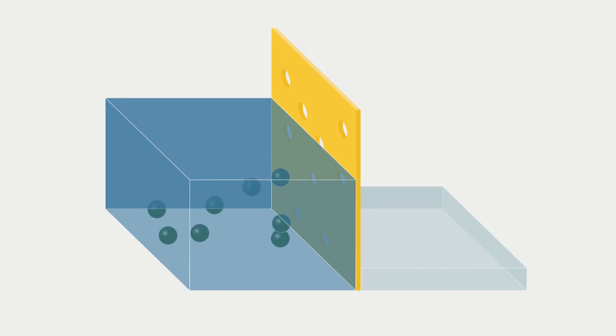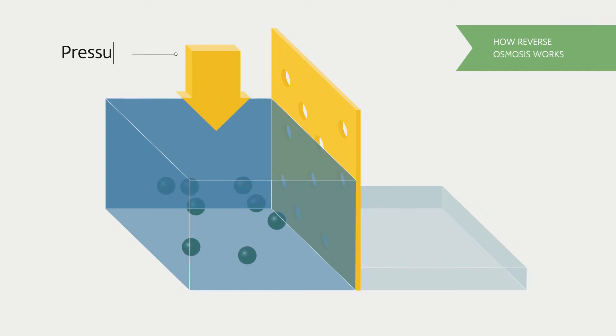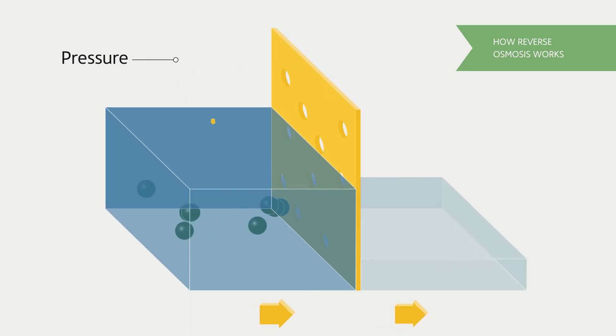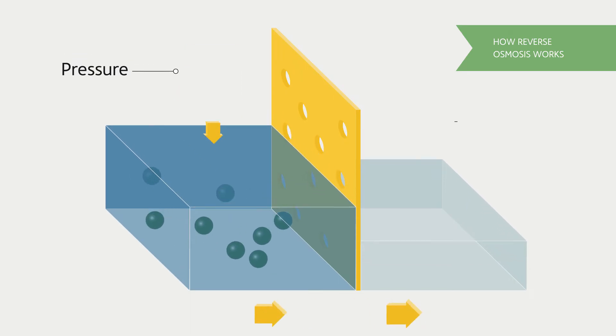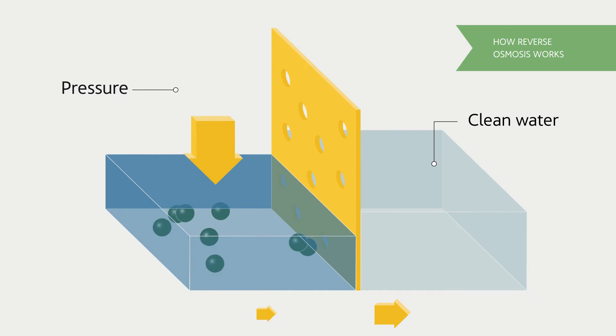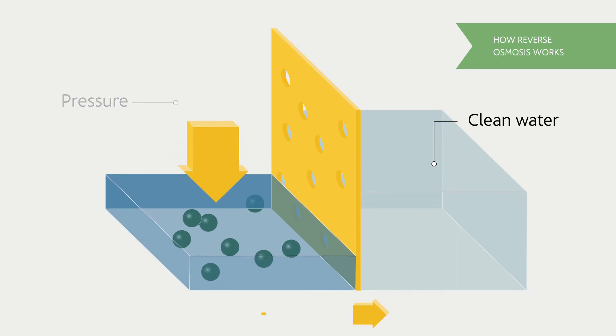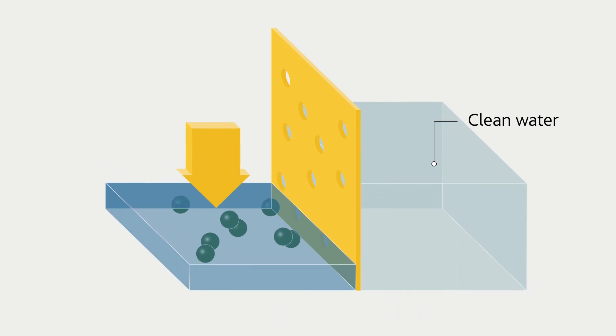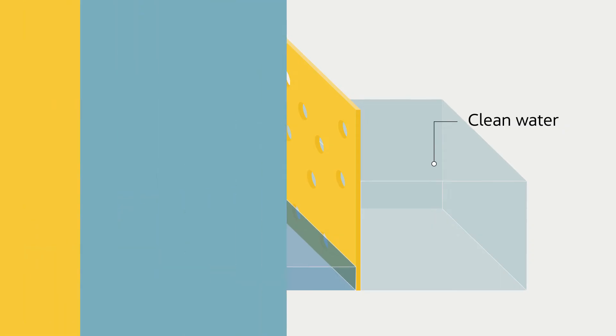This process is inverted in reverse osmosis. We take in seawater, a highly concentrated solution, and force it through the membrane by adding pressure. On the other side we obtain salt-free water, while back on the first side the remaining water still holds the salt the membrane prevented from passing through.